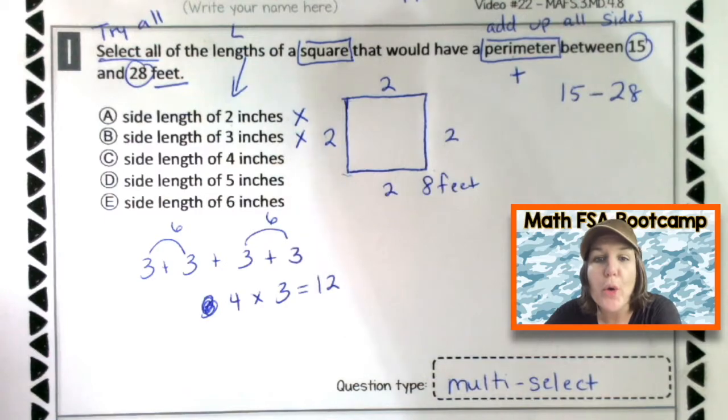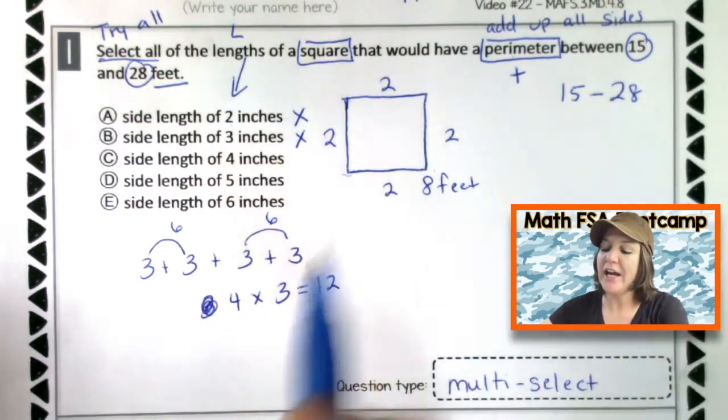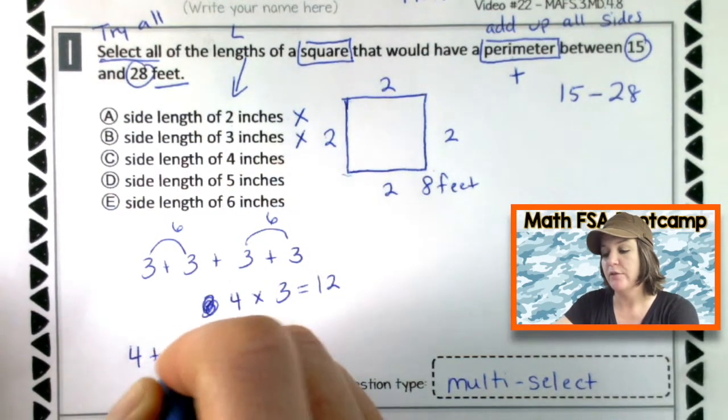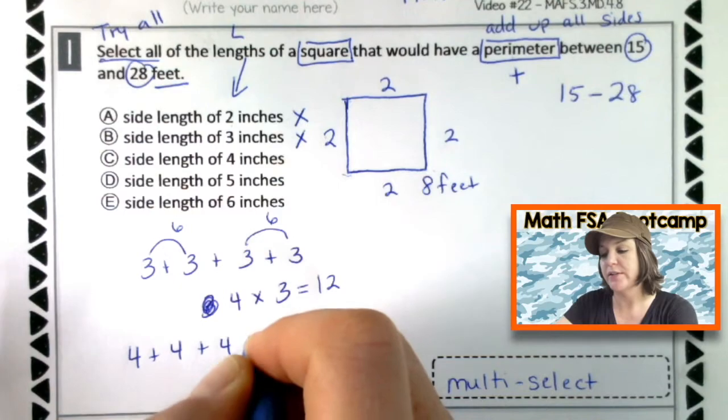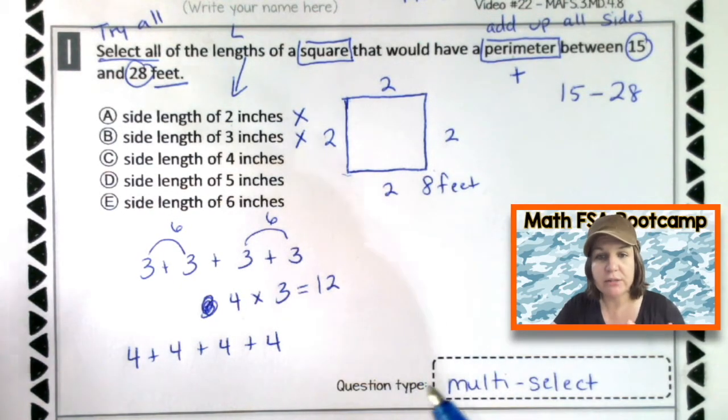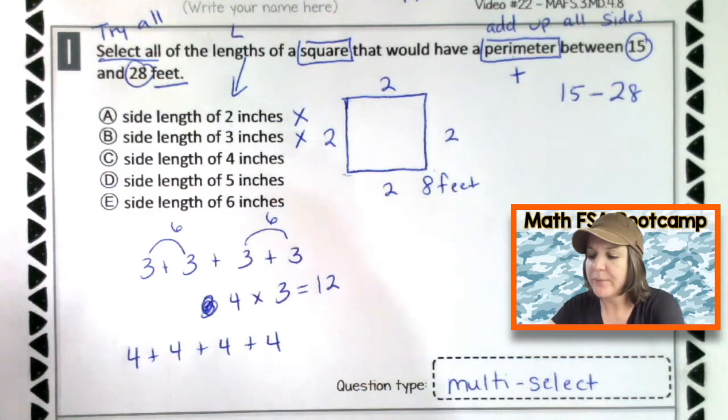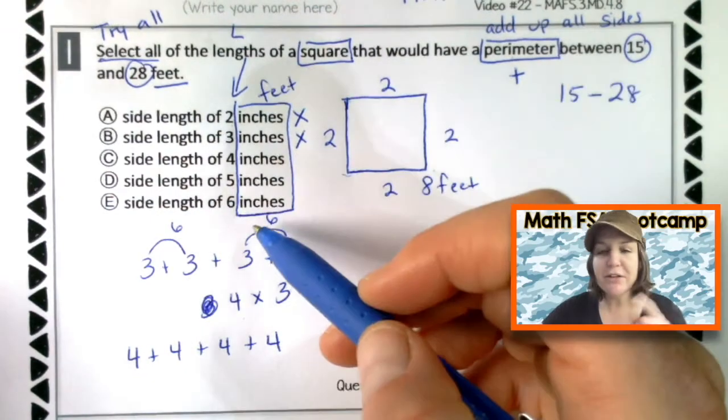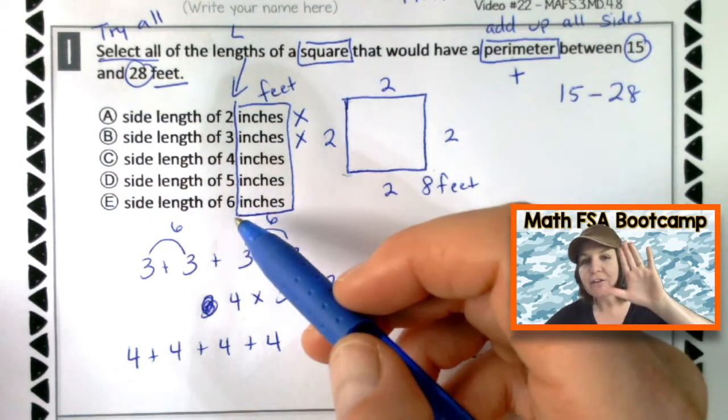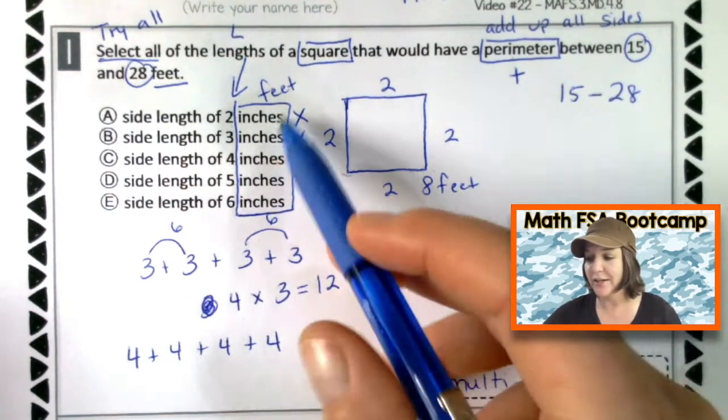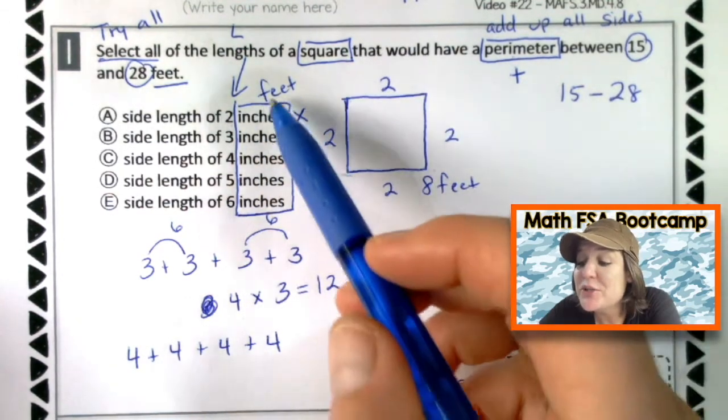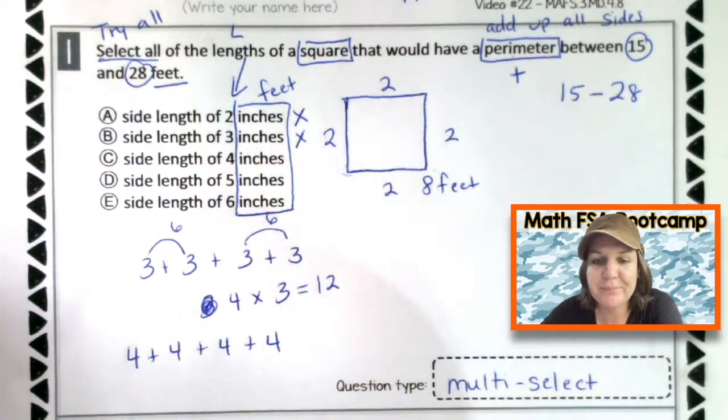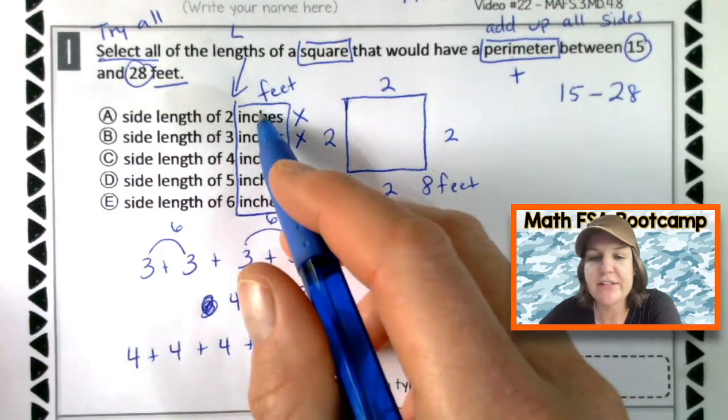So, what if we had side lengths of four? That would be four plus four plus four plus four. Four sides that each have four inches. Oh, you know what? I made a mistake. I'm noticing here, I forgot to change the unit. If you noticed that before I did, air five to you. And if you didn't, that's okay. What I'm going to do is I will fix this as soon as I finish filming. That way you see feet here.